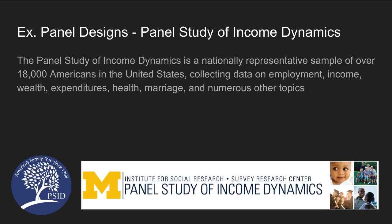One example of a panel design is the Panel Study of Income Dynamics, conducted by the Institute for Social Research at the University of Michigan. It is a nationally representative survey of more than 18,000 Americans, and it collects data on employment, income, wealth, expenditures, health, marriage, and a range of other topics. What makes this a panel design is that those 18,000 Americans are surveyed at multiple points in time.